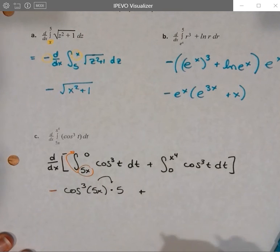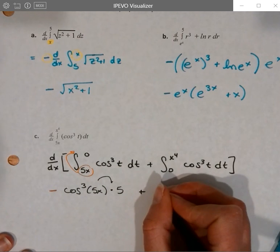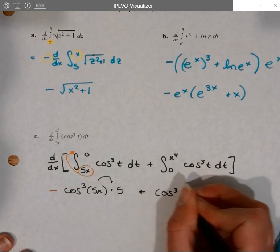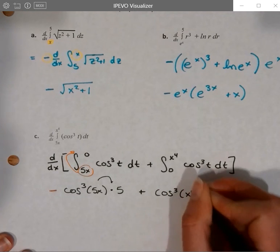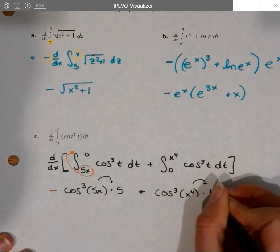Then plus, this one's already on top, so it's not going to change sign, so plus our cosine cubed of x to the 4th, chain rule on that, times 4x cubed.